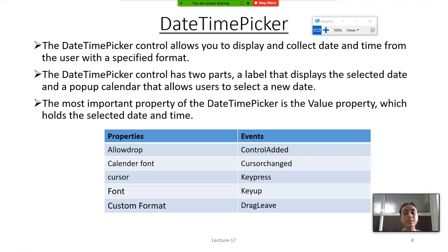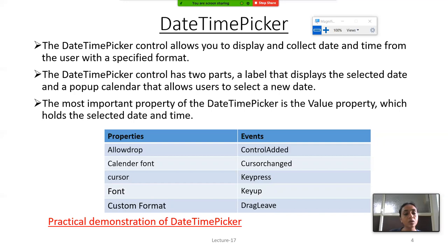Here are the properties and events of Date and Time Picker. Properties include Allow Drop, Calendar Font, Cursor, and Custom Format. Events include Control Edit, Cursor Changed, Key Press, Key Up, and Drag Link. Now we will see how to practically demonstrate the Date and Time Picker.